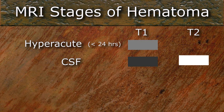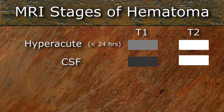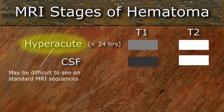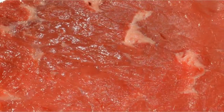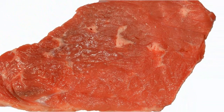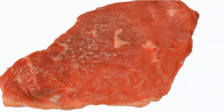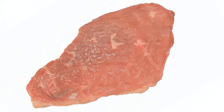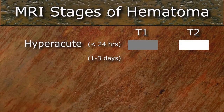making the hyperacute bleed iso-intense to the adjacent brain on a T1-weighted image and iso-intense to CSF on the T2-weighted image. This can make a small hyperacute bleed very difficult to see on standard T1 and T2-weighted images. Oxyhemoglobin and oxymyoglobin are both bright red — hence the color of arterial blood and the surface of a fresh steak exposed to atmospheric oxygen. From 1 to 3 days, the hematoma is considered acute.